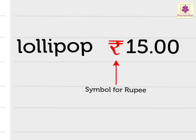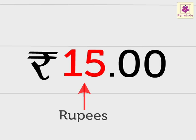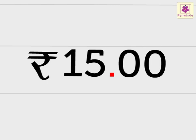We use this symbol instead of the word rupee. Now, let us see what 15.00 means. The number 15 indicates the rupees and the two zeros indicate the paise. The dot is used to separate the rupees from the paise. The rupees are written to the left of the dot, and the paise are written to the right of the dot. Two places are used when writing the paise after the dot. We read this as 15 rupees, 0 paise.